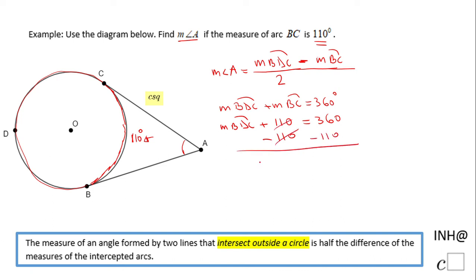The measure of arc BDC will be 250 degrees. Now we can go back to the formula mentioned at the beginning.